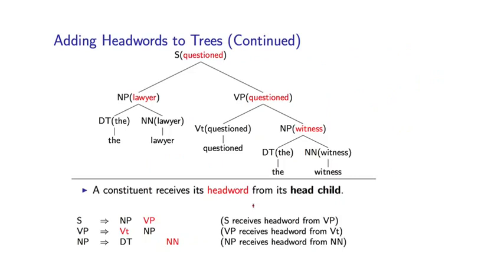So how is this process performed? Let's again look at this example. The critical idea is to propagate lexical items bottom up through the tree, where each constituent receives its head word from its head child.